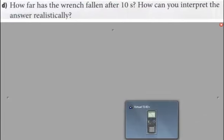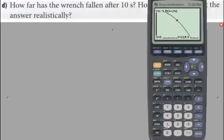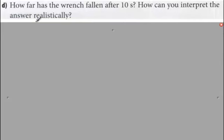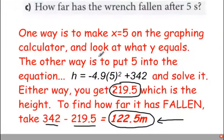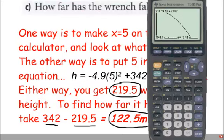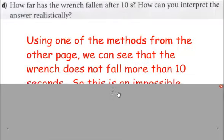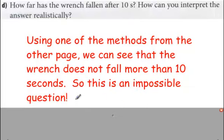So it says how far has the wrench fallen after 10 seconds? Well, we already figured out 5 seconds. Let's type in 10 now. Look at that. Look at the answer we got. Negative 148. That's way down below. That answer does not make sense because it's going to hit the ground and bounce, if anything, right? So in real life, this answer makes no sense whatsoever. How can you interpret the answer realistically? Well, we can say that this graph does not make any sense. So using one of the methods from the other page, remember, I told you there's two ways to do it before. You could put a 10 right here, and you could get that same answer of negative 148. But either way, no matter which way you do it, graphing calculator or algebraically, you're going to get an answer that doesn't make any sense. A negative answer for the height. That's impossible. So this is an impossible question to answer realistically. It's impossible.